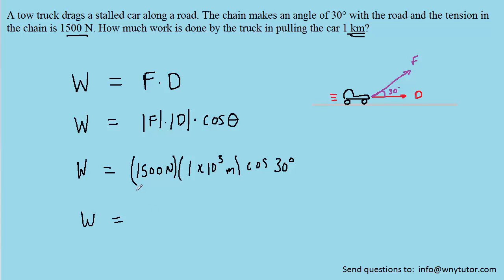So we know that if we multiply these values right here, we're going to get 1.5 times 10 to the power of 6. And then the unit would be Newton meters. Now the cosine of 30 degrees, of course, is radical 3 over 2.